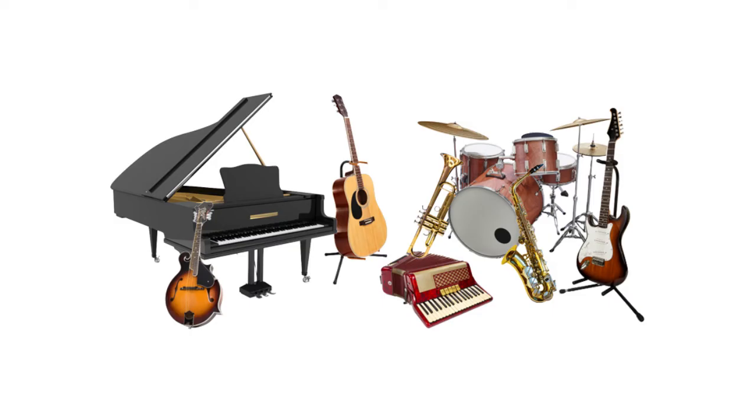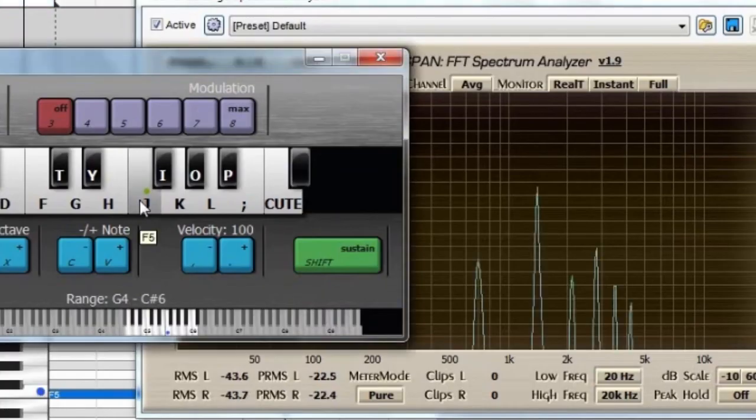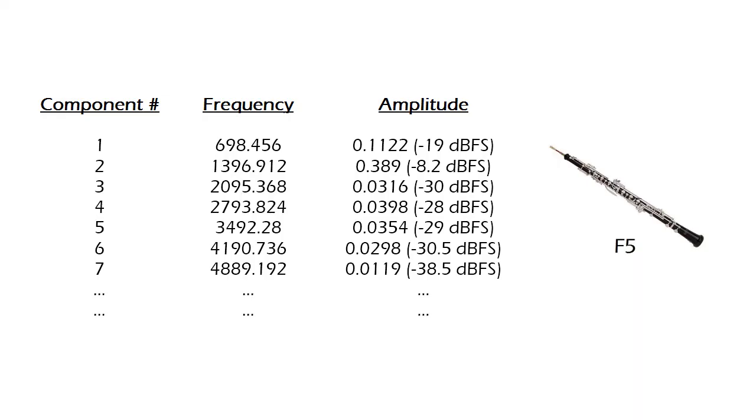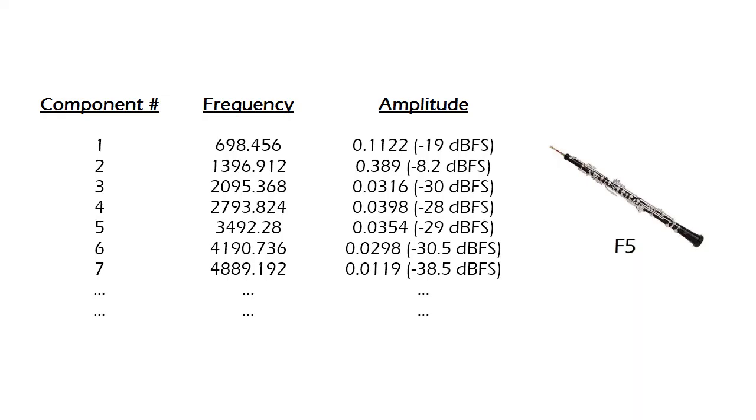Additive synthesis may also be used to synthesize the sound of musical instruments, although in this case it's a bit more complicated since in a musical instrument's sound, its components are varying their amplitude with time. For example, these are the approximate frequencies and amplitudes of the sine waves required to imitate the sounds of an oboe playing the note F5.